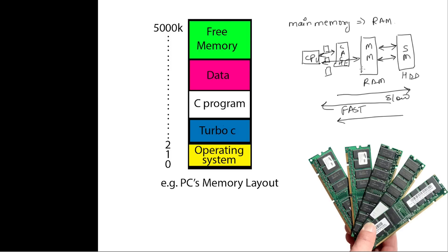Whenever you execute a program, that program first gets stored in your main memory — some memory is allocated to that program and then it is executed. In this diagram, representing main memory, there are data variables stored in it. For example, a C program, the compiler, and the operating system all reside in the main memory. The operating system resides in the lower portion and the free space is in the upper portion.